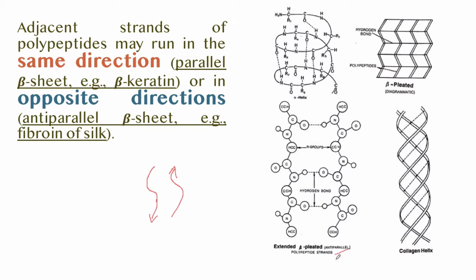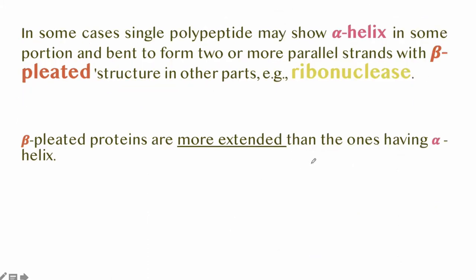Anti-parallel polypeptide strands run in opposite directions. In some cases, a single polypeptide may show alpha helix in some portions and bend to form parallel strands with beta pleated structure in other parts — a common example is ribonuclease, which has both alpha helix and beta pleated sheet regions. Beta pleated proteins are more extended than those having alpha helix.